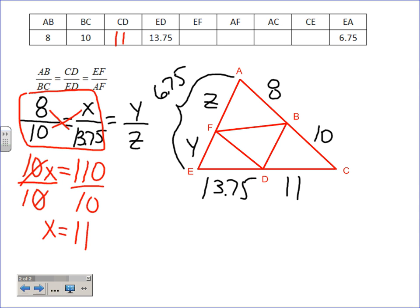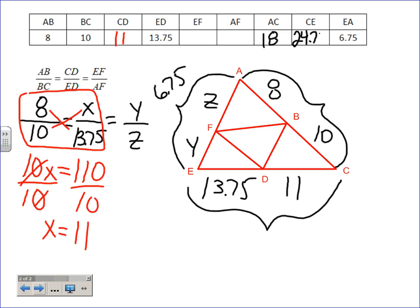We now know X = 11. The table asks for AC and CE — can we calculate those? AC and CE can be determined from the segments we know. CE works out to 24.75. However, here's the key: AC, CE, and AE are not even in this proportion over here, so we can't use those directly. We need to focus on Y, Z, and the 6.75 we have. But if we try that setup, we still have two variables, so we need another approach.